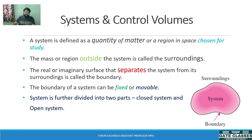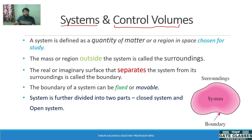Now we will understand another word: system. If we want to understand thermodynamics further, we first have to be clear about what a system is. System is also called control volume. A system is anything — any quantity of matter or a region in space — which is chosen for study. Whatever we choose to study is called the system.